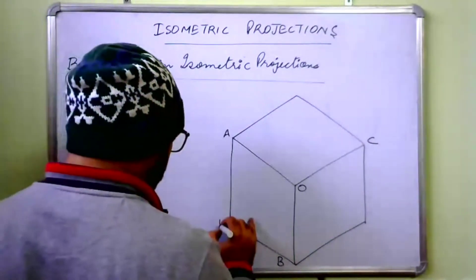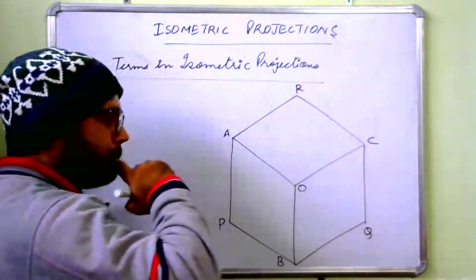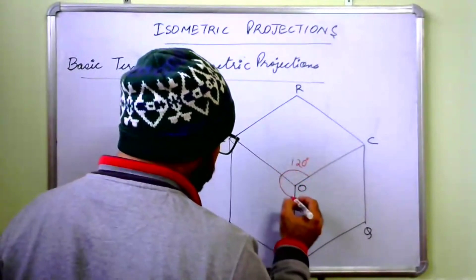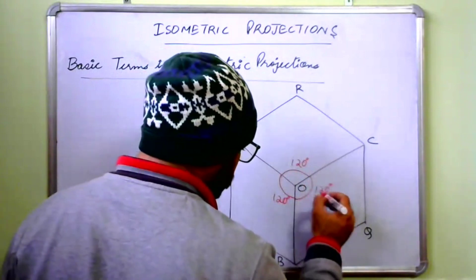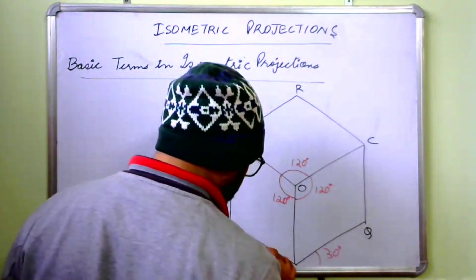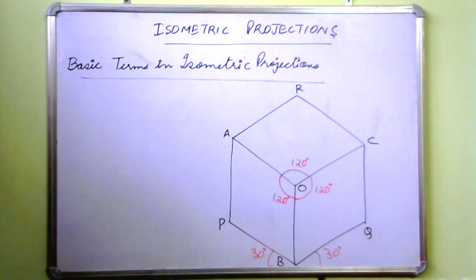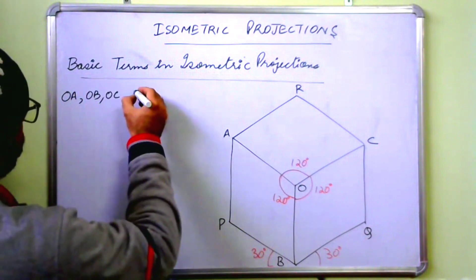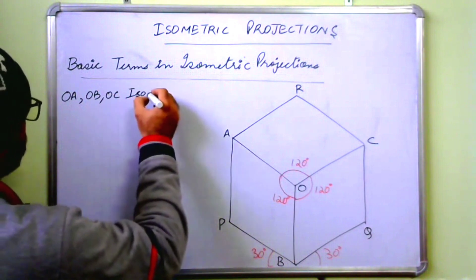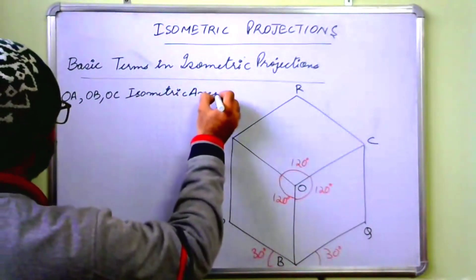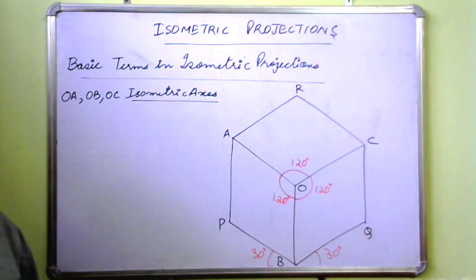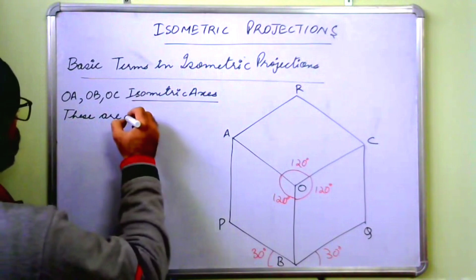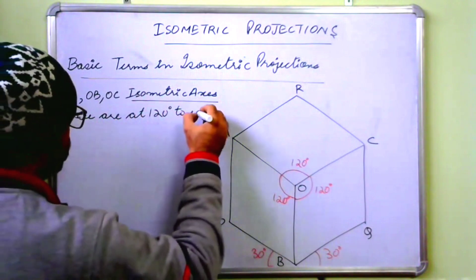Let us also label this as P, Q, and R. Here this angle is 120 degrees, this is 30 degrees, and this is also 30 degrees. The lines OA, OB, and OC are known as isometric axes. These isometric axes are at 120 degrees to each other.